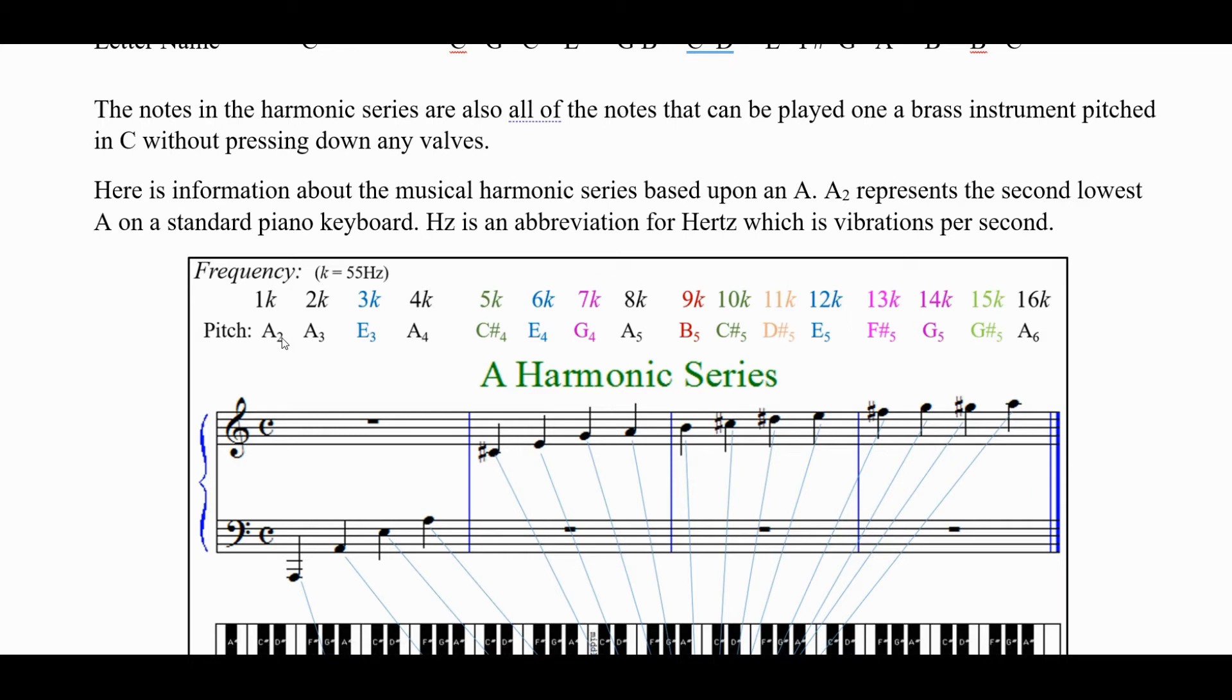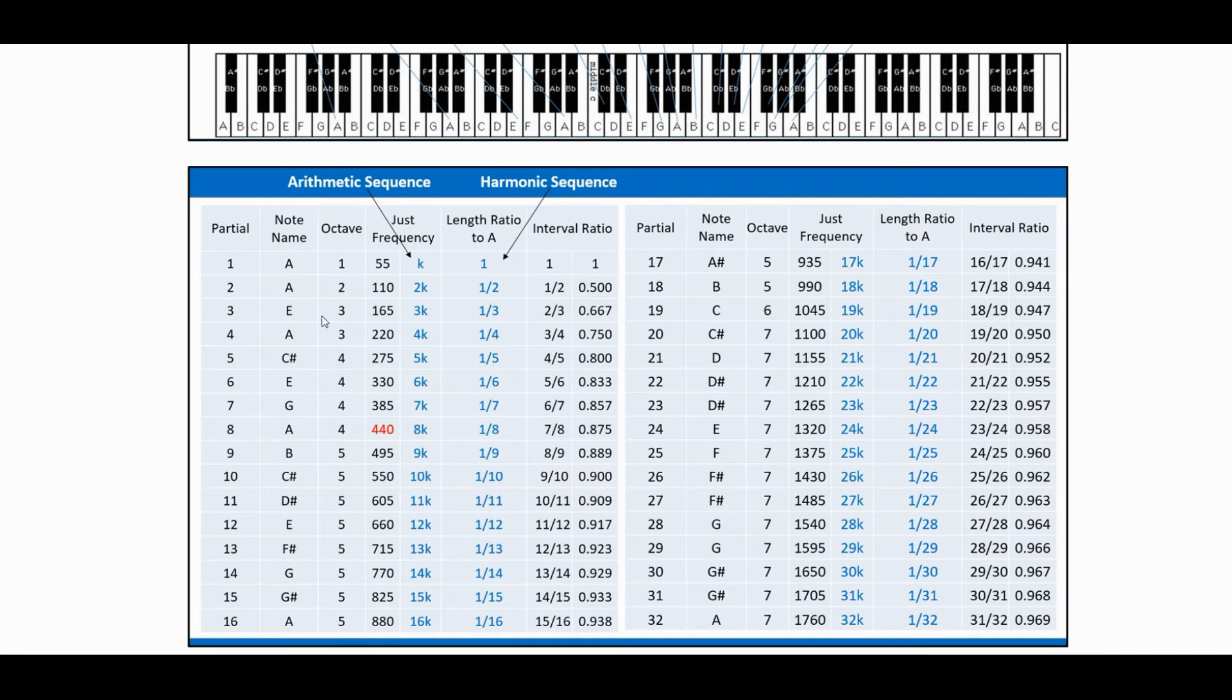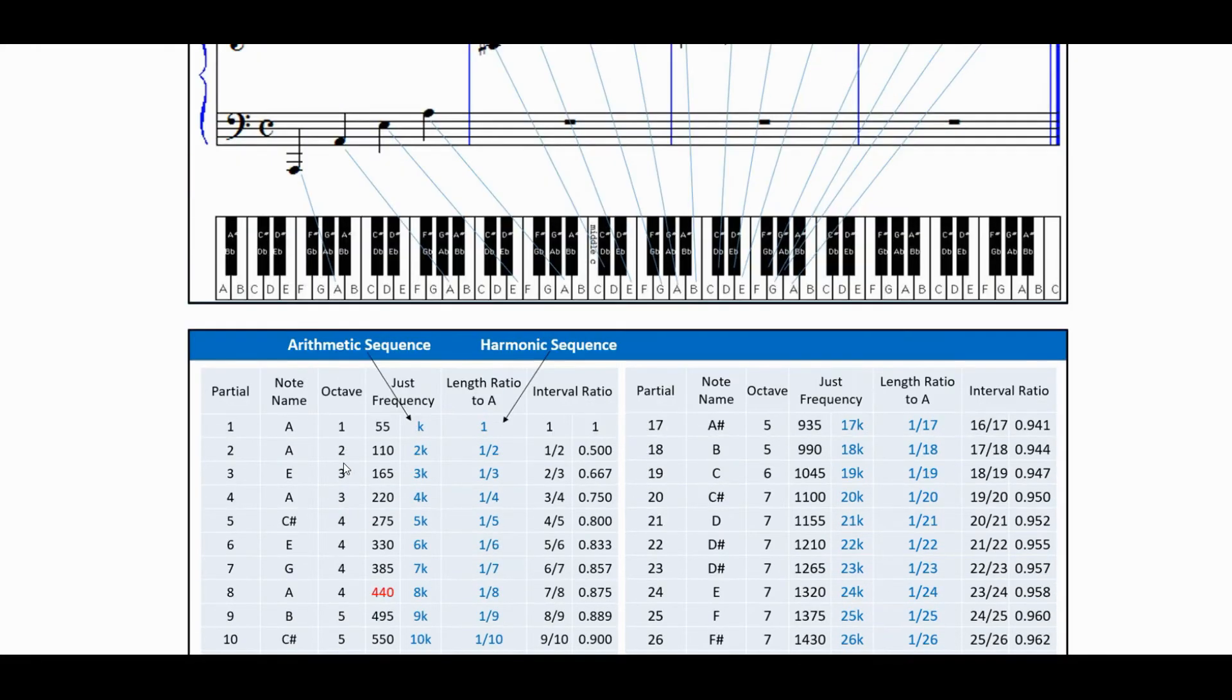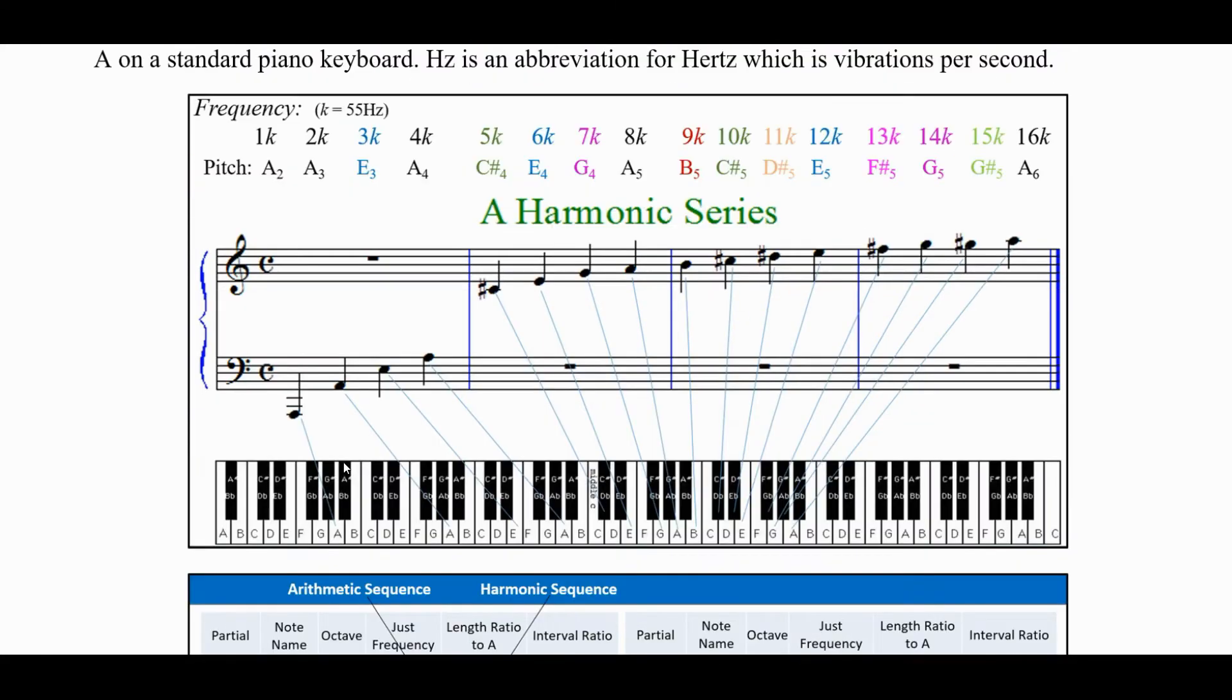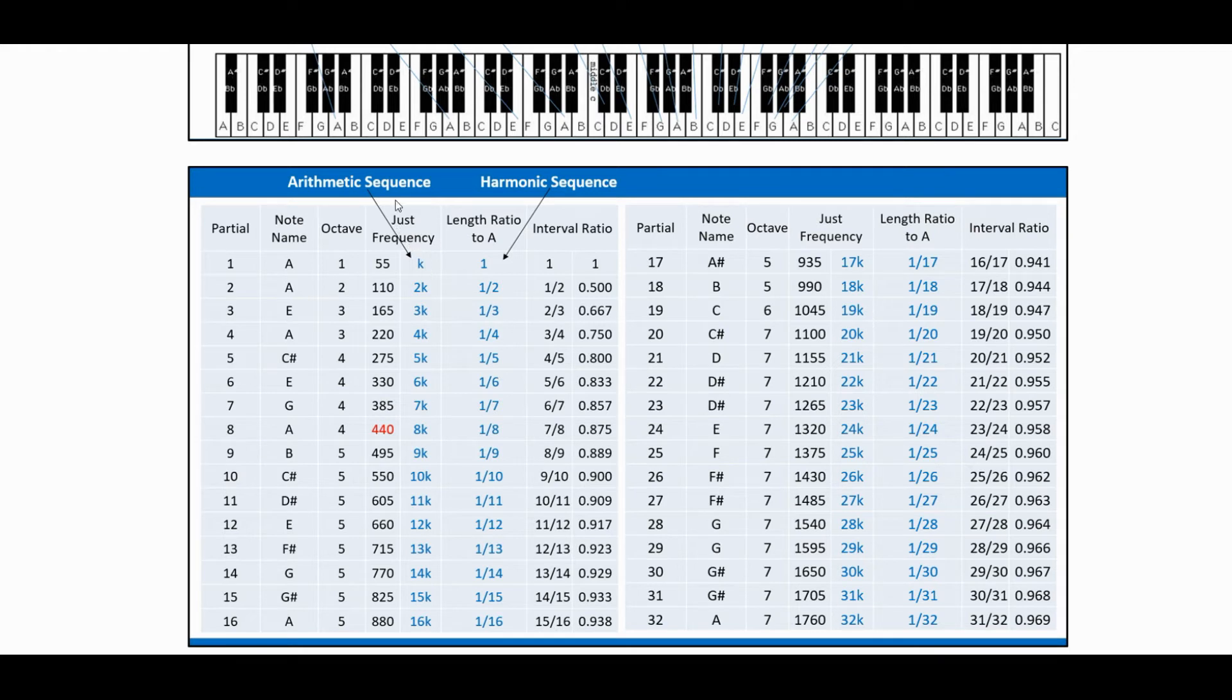A 2 is the 2nd lowest A on the piano. A 3 is the 3rd lowest A on the piano. I'm using that notation for the octave designations. Here are the pitches, the note name and which octave it's in, the frequency there. And you actually have an arithmetic sequence here, just adding K each time when we're going up in terms of what's happening to the frequency.